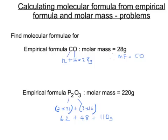But the molar mass is 220 grams, so let's do 220 over 110, which is 2, so the multiplying factor is 2. Our molecular formula must be twice what our empirical formula is then, so our molecular formula is P4O6.